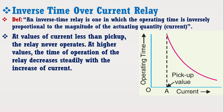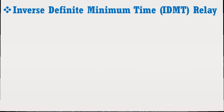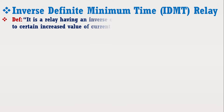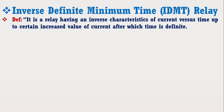Now let's define the IDMT relay. A relay having an inverse characteristic of current vs time up to certain increased values of current, after which time is definite, is known as an IDMT relay. This means that for some values the operating time of the relay will be inversely proportional to the magnitude of the over current, but after some values its operating time remains constant irrespective of any high value of current.